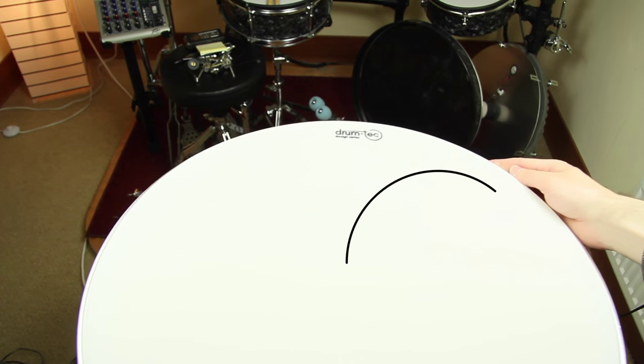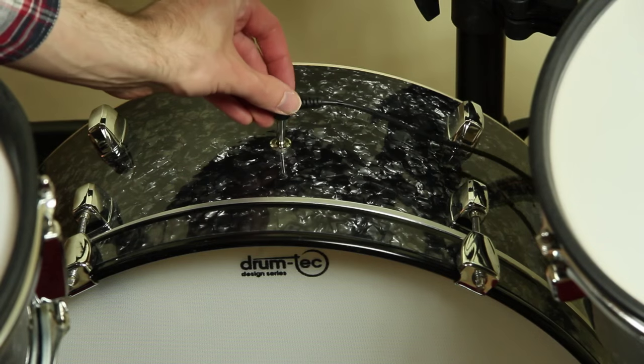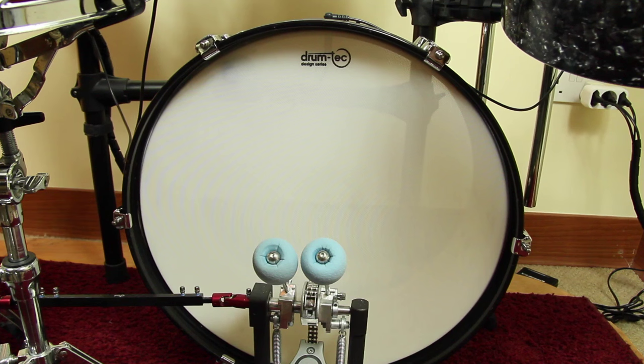A 20-inch Drum Tech Series 2-ply mesh head is getting applied. The position inside the bass drum should be near 6 or 12 o'clock to make sure the distance to both beater impact spots is similar.